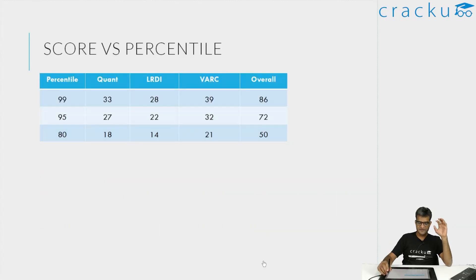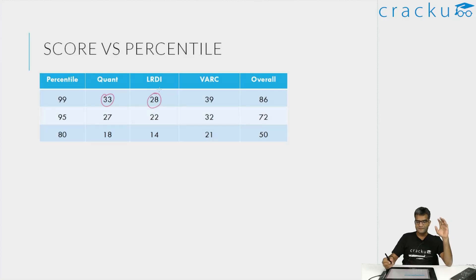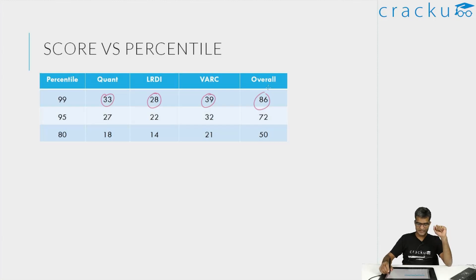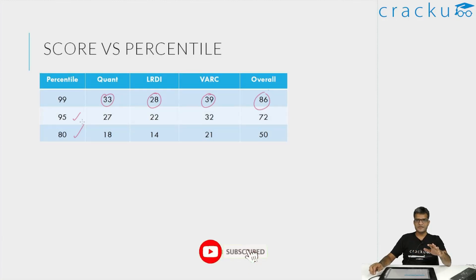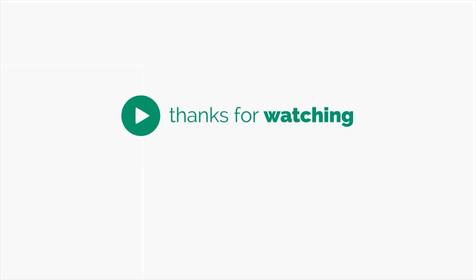Overall percentile expectations: for quant, 99 percentile is 33 marks. For LRDI, 99 percentile is 28 marks. For verbal, it is between 39 to 40 marks. Overall, if you get 86 marks, that is 99 percentile. You can similarly find out the scores for 95 and 80 percentile. If you have any doubts with respect to mocks or your CAT preparation, please do comment below this video — I look at all the comments and will try to respond to them. Thank you.